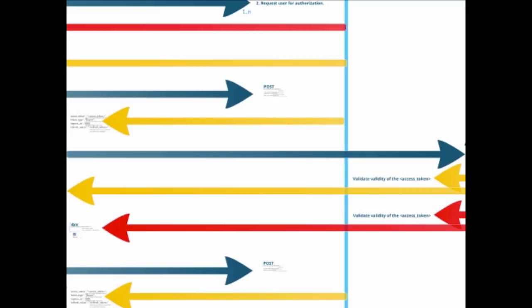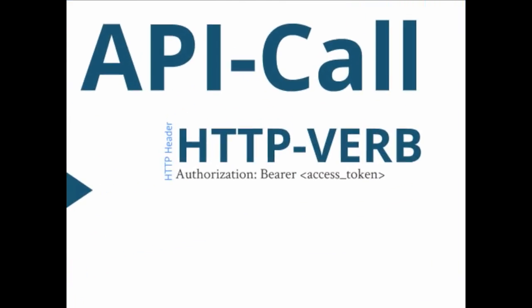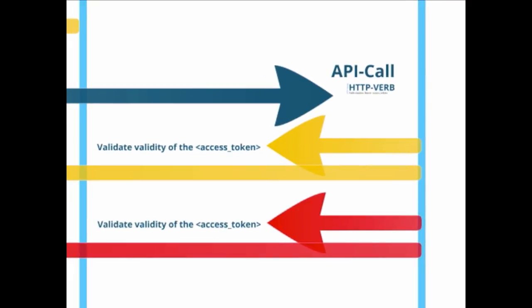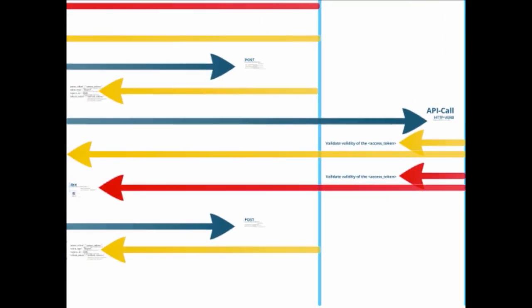With the access token, you can start calling the API at the resource provider. Simply add an authorization header to your HTTP call — for a GET request, send the access token as an HTTP Authorization header. The resource provider validates the token against its authorization server, and if valid, returns the response with data.